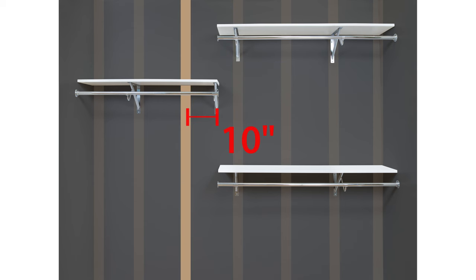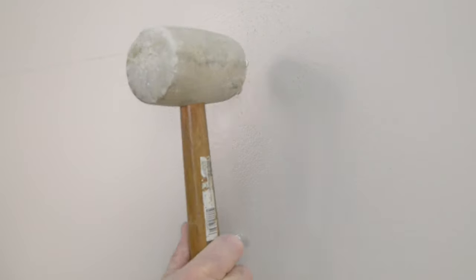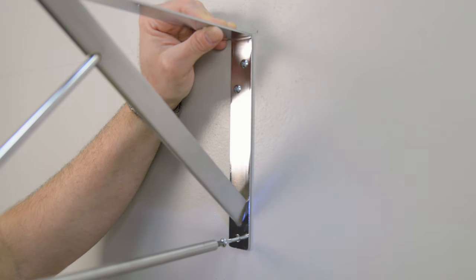The long hang section has a stud 10 inches from the end of the shelf. Since the stud is more than 9 inches from the end of the shelf, we will move the support to the end and install into drywall using Tri-Lock 2 anchors and screws.